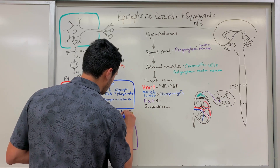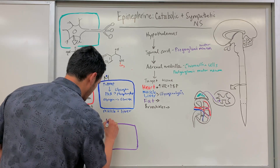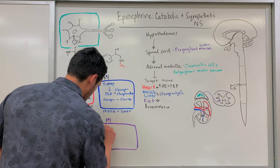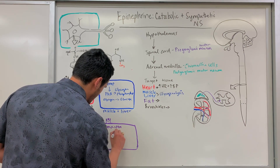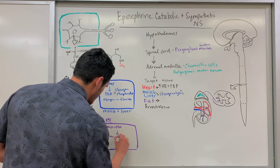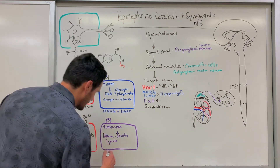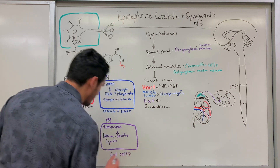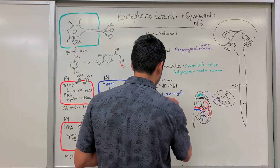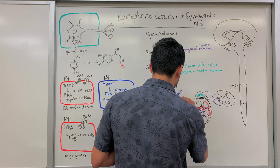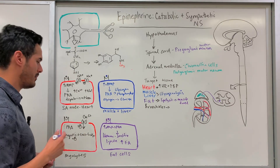Within fat cells (adipose cells), once again we increase cyclic AMP by binding, activate PKA, which then activates hormone-sensitive lipase. This results in an increase in fatty acids and glycerol. The fatty acids get into the blood — lipolysis occurs — and these byproducts can be used as muscle fuel to meet the energy demands of getting away from that bear or tiger.